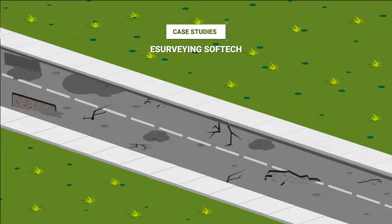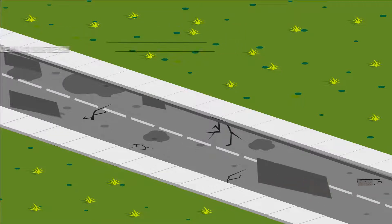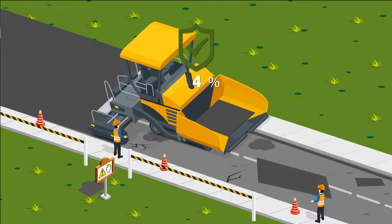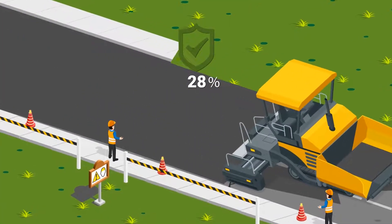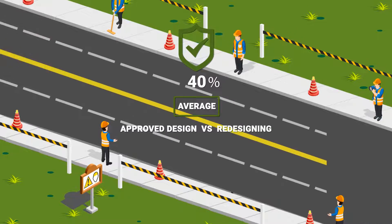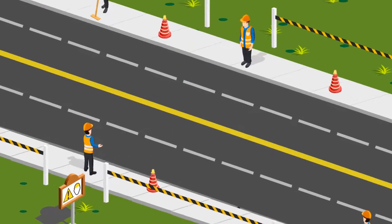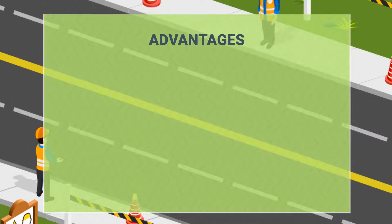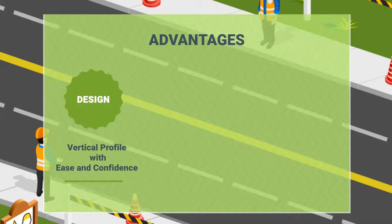In some of the case studies done by E-Surveying Soft Tech India Private Limited, it is estimated that about 40 percent of the construction cost of profile corrective course was achieved on average, comparing approved designs versus redesigning using the PCC optimization algorithm software.